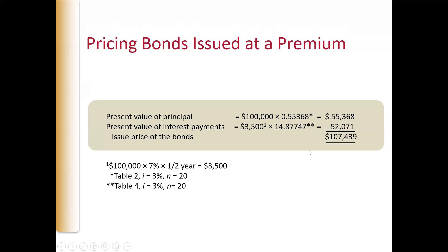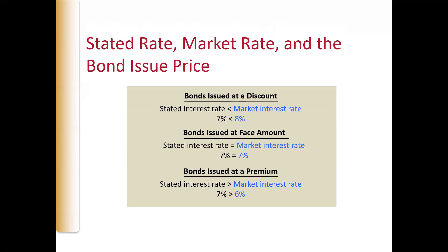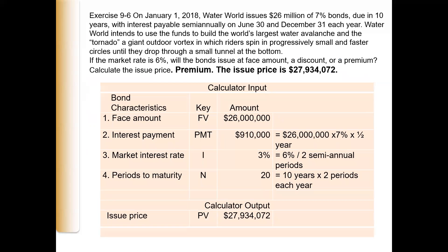This slide here is really important. If the stated rate is less than the market rate, bonds will be issued at a discount. If the stated rate is equal to the market rate, bonds are going to be issued at face amount. And if the stated rate is greater than the market rate, bonds will be issued at a premium. We then did a couple of problems and determined how to calculate interest and the various aspects of bonds.